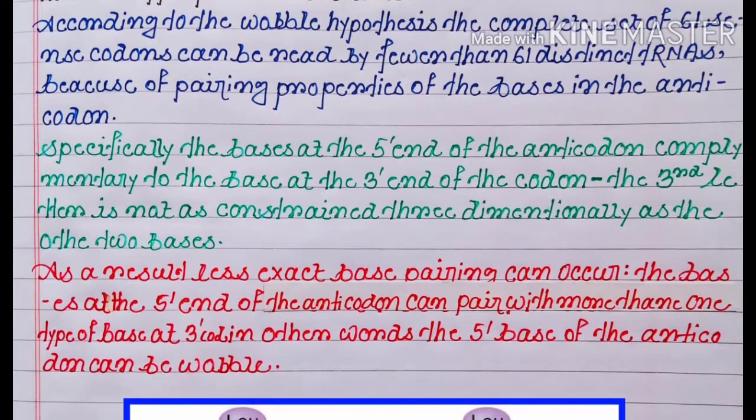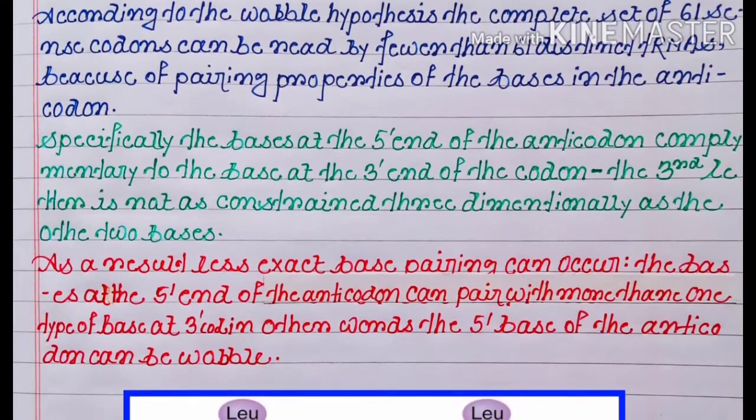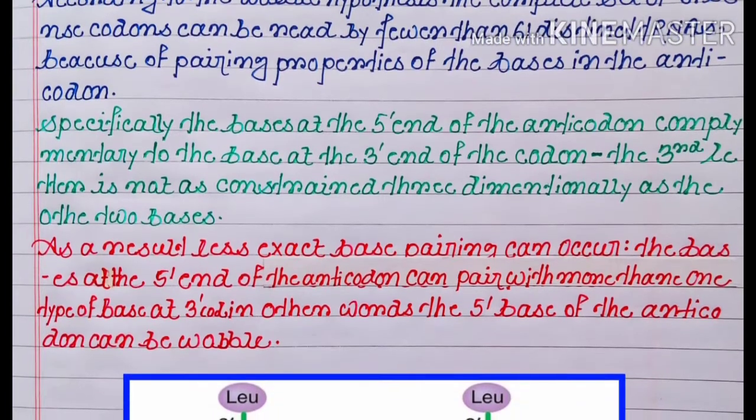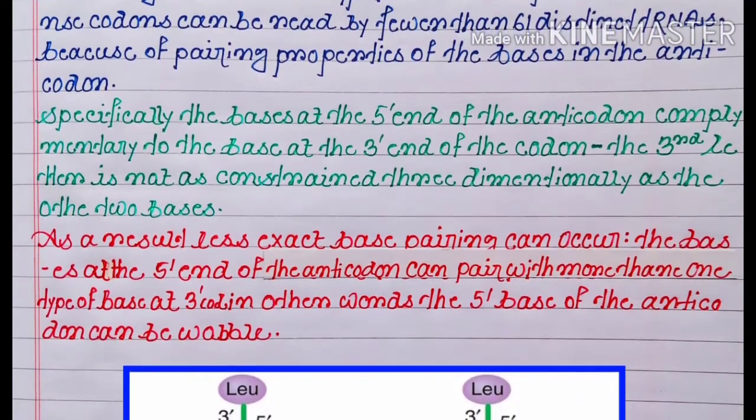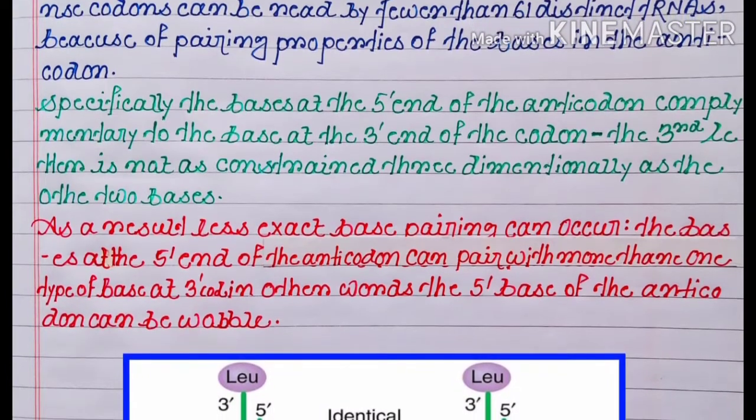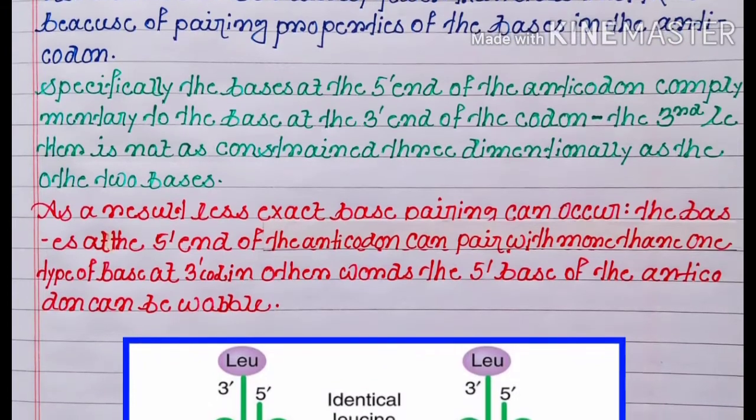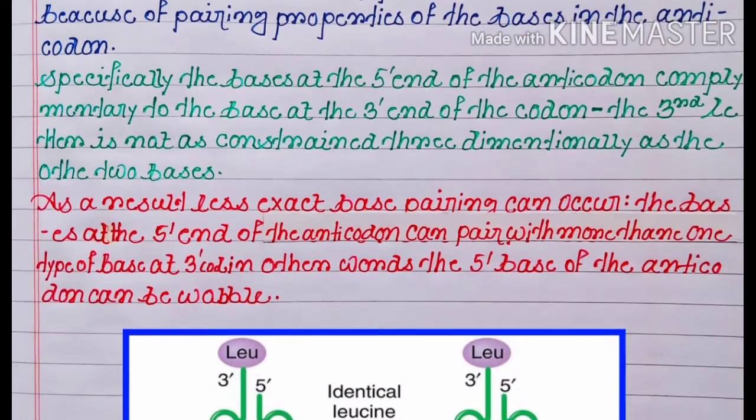This is because of pairing properties of the bases in the anticodon, specifically the base at the 5 prime end of the anticodon complementary to the base at the 3 prime end of the codon. The third letter is not as constrained three-dimensionally as the other two bases.